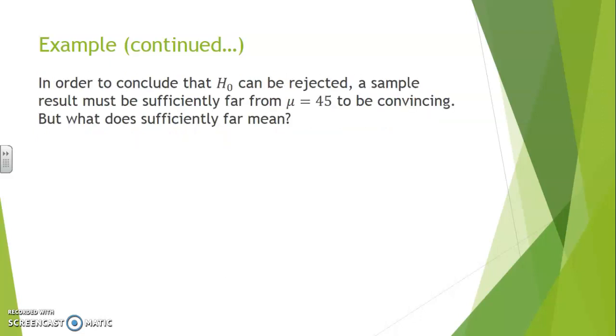In order to conclude that H0 can be rejected, a sample result must be sufficiently far from mu equals 45, either left or right, to be convincing. But what does sufficiently far mean?